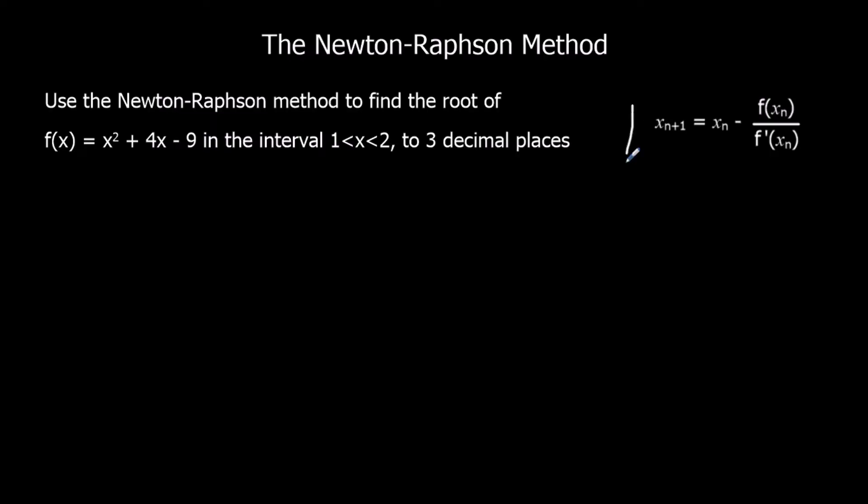We've been given the formula. It's in the formula book. We need our function, which we've been given. f(x) is x² + 4x - 9.